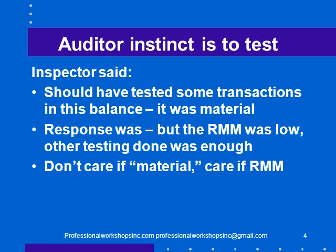This is kind of an auditor instinct to test. An inspector looking at one of our files said to me, 'I think you should have tested some transactions in this balance — it was material.' That's the standard auditor response. My response was, 'Yeah, but the risk of material misstatement was low, and the analytical and control testing, the systems walkthrough we did that covered that particular balance, was enough.' And the inspector said, 'Oh yeah, okay, you're right.' So we don't care if the balance is material or not — we care if the balance contains a risk of material misstatement. Cash could be a very small balance but have a significant risk of material misstatement. Property, plant and equipment could be a very large number but not have much risk of material misstatement at all. So saying 'it's material, I should look at it' is incorrect, and that leads us to auditing by re-performing a bunch of transactions.